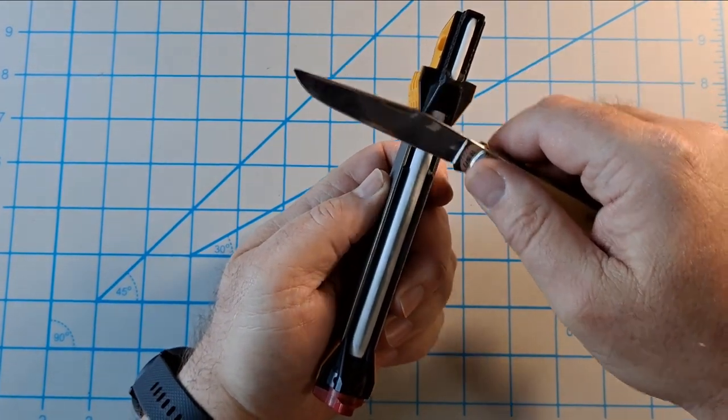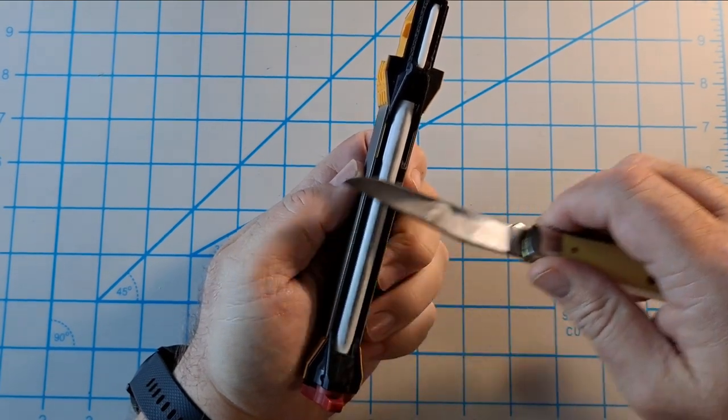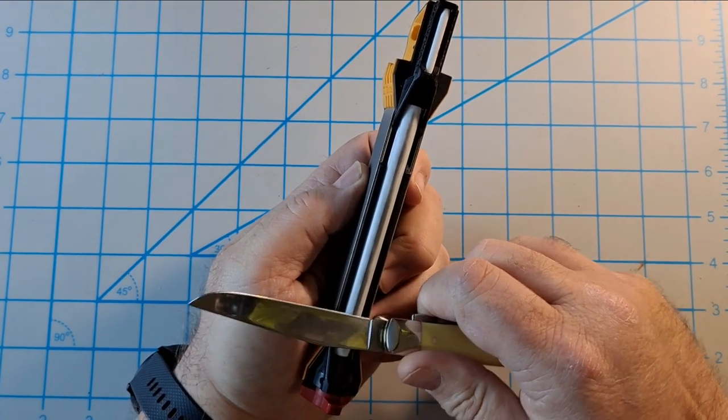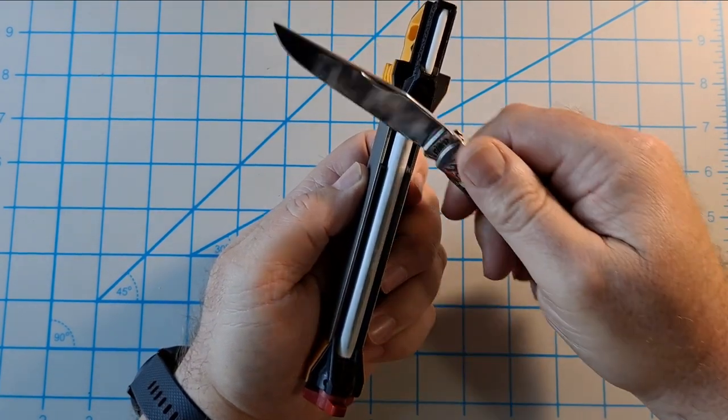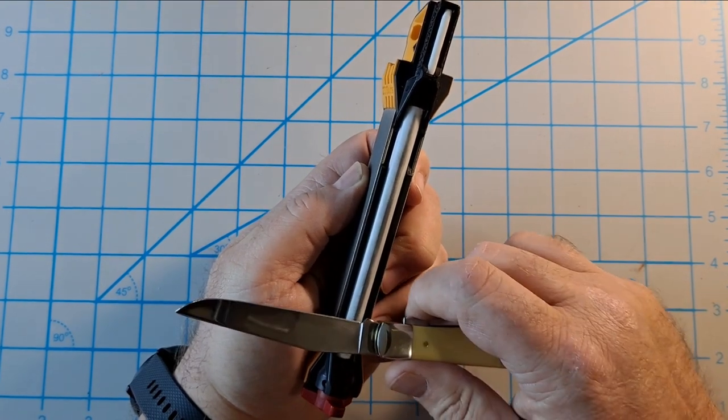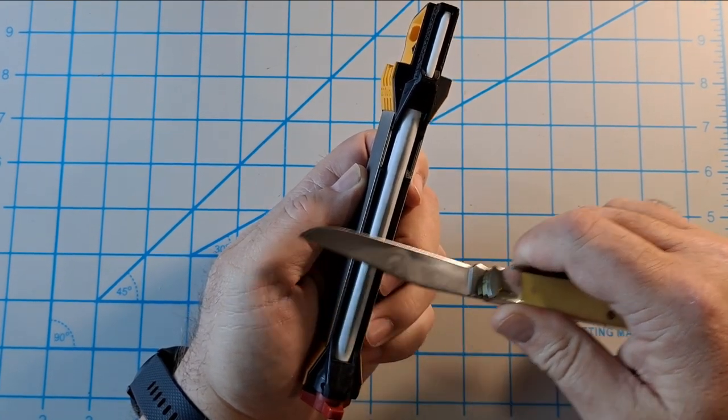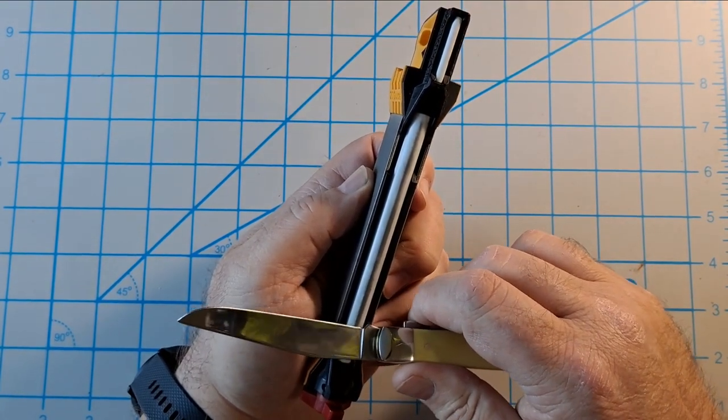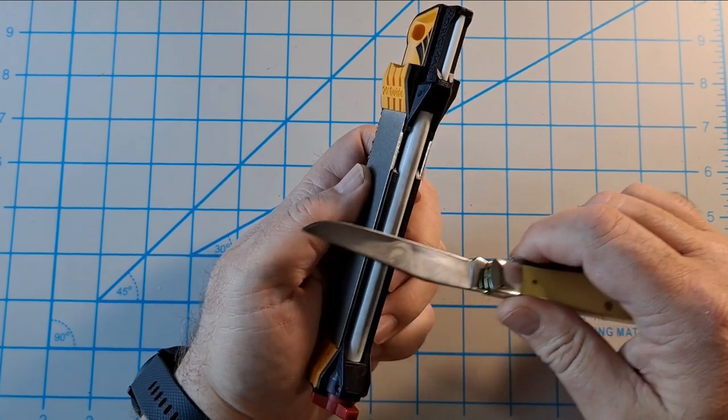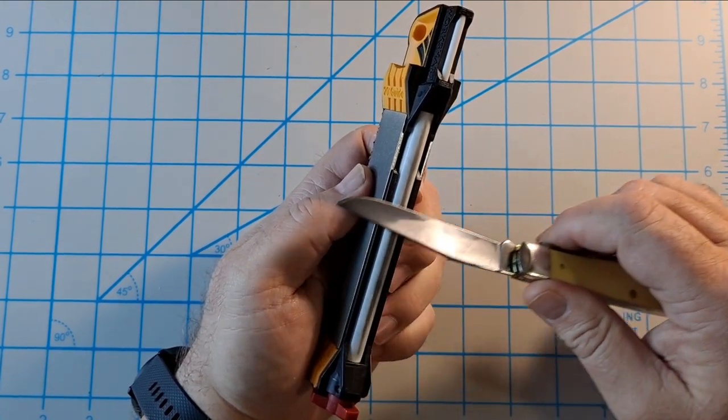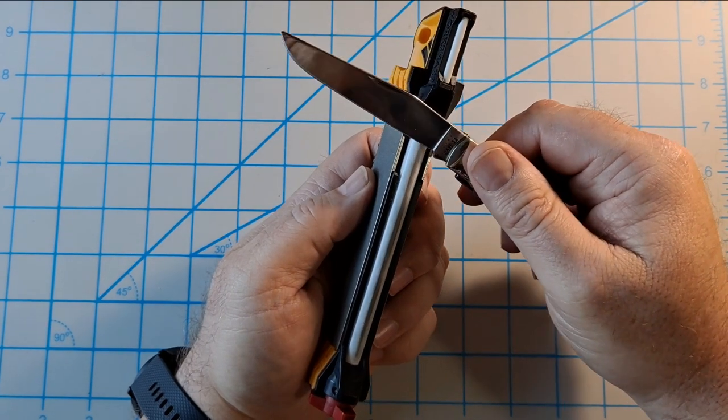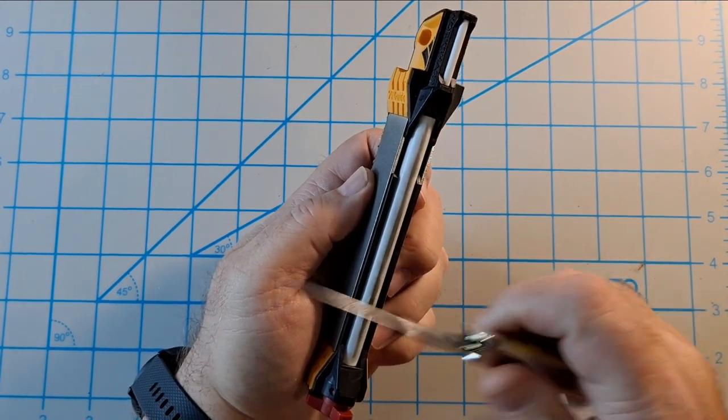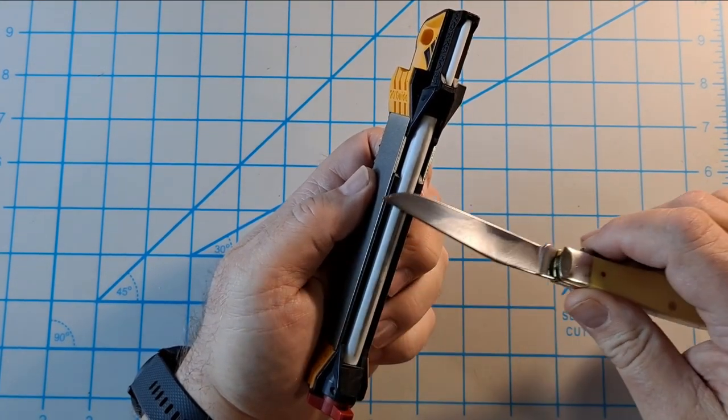We'll just do some passes on the ceramic rod, and strop it and see if there's any difference. I'm not putting any pressure on this. I'm just trying to take off any burr that's left on there from sharpening. Like I said, it was pretty rough.